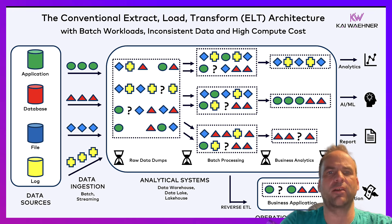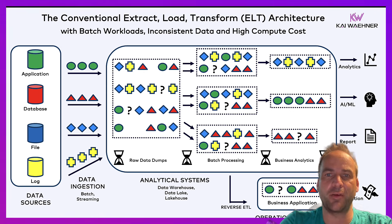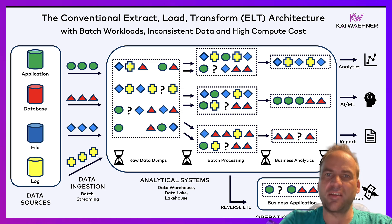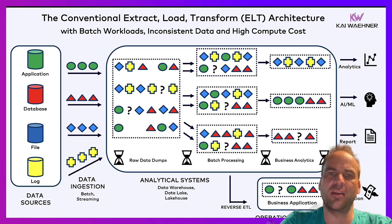Unfortunately, there are a lot of anti-patterns used here to create batch workloads with stale data and inconsistent information, where different consuming applications have different information available — either at different times, like one is real-time and one is batch so they see different data, or they use different compute and processing. Some applications might lose some data, some simply didn't process it or used a different process. So the data is inconsistent on the consumer side. And also, you have a lot of high compute cost because very often the data is processed again and again.